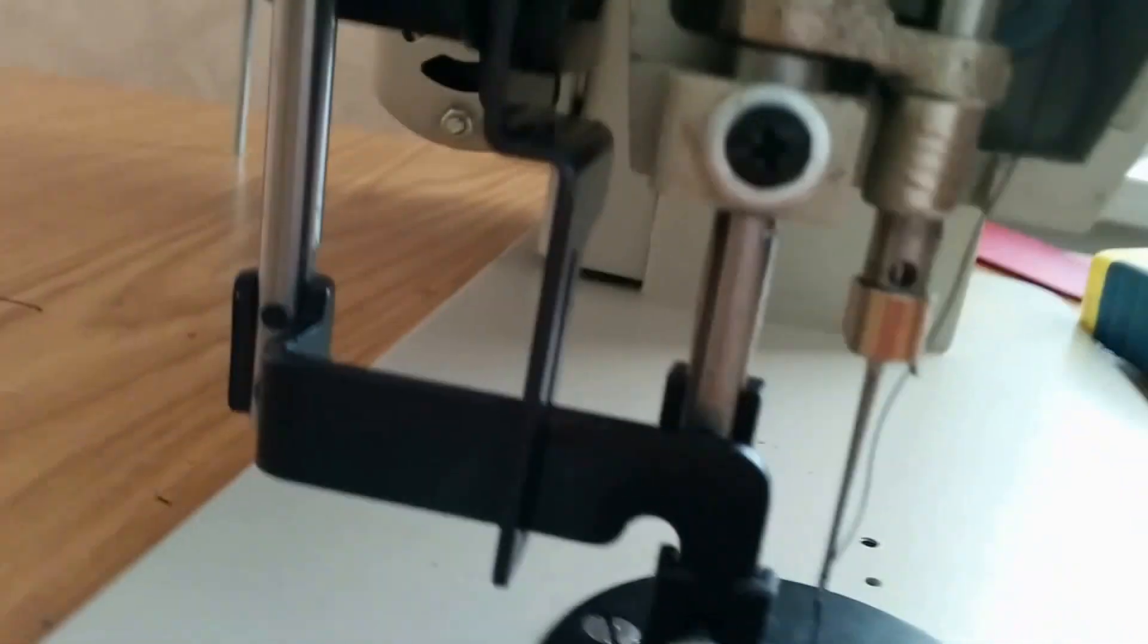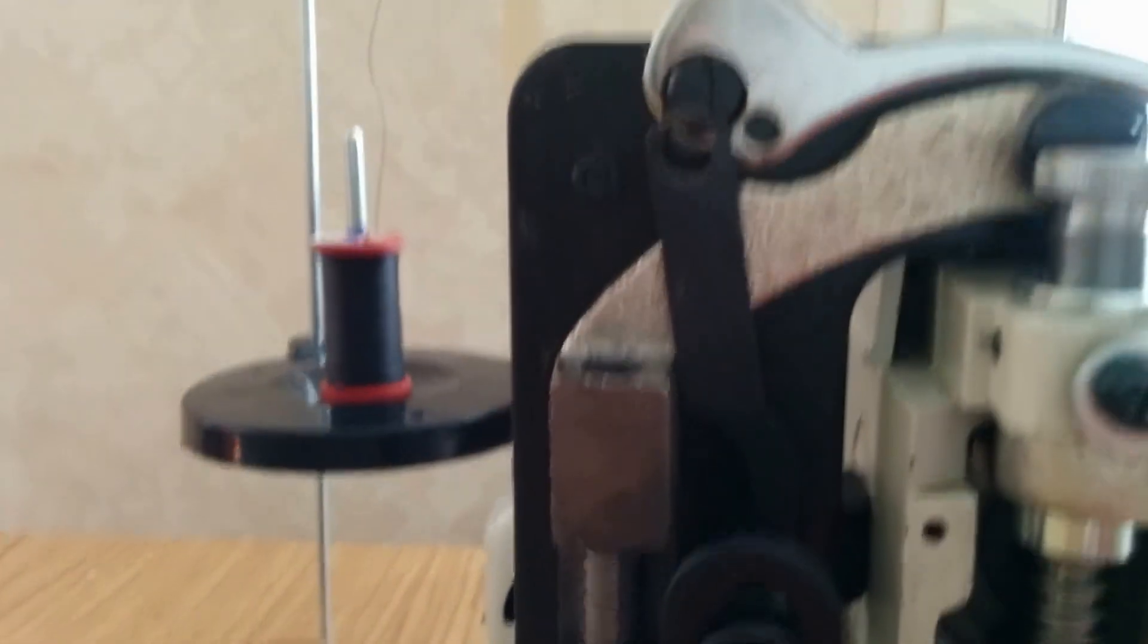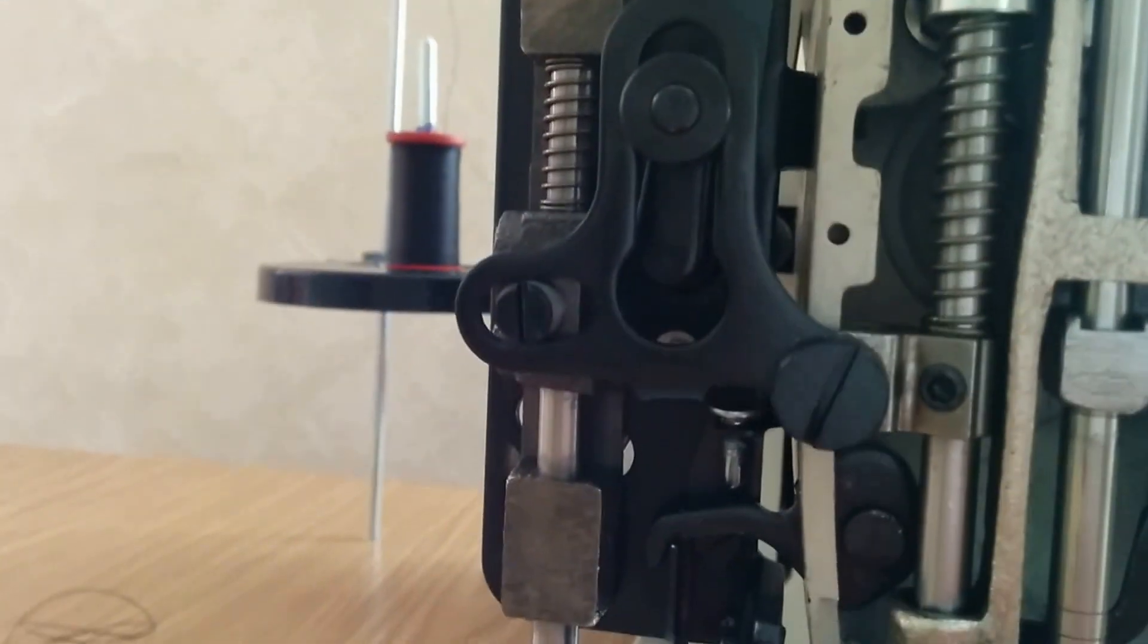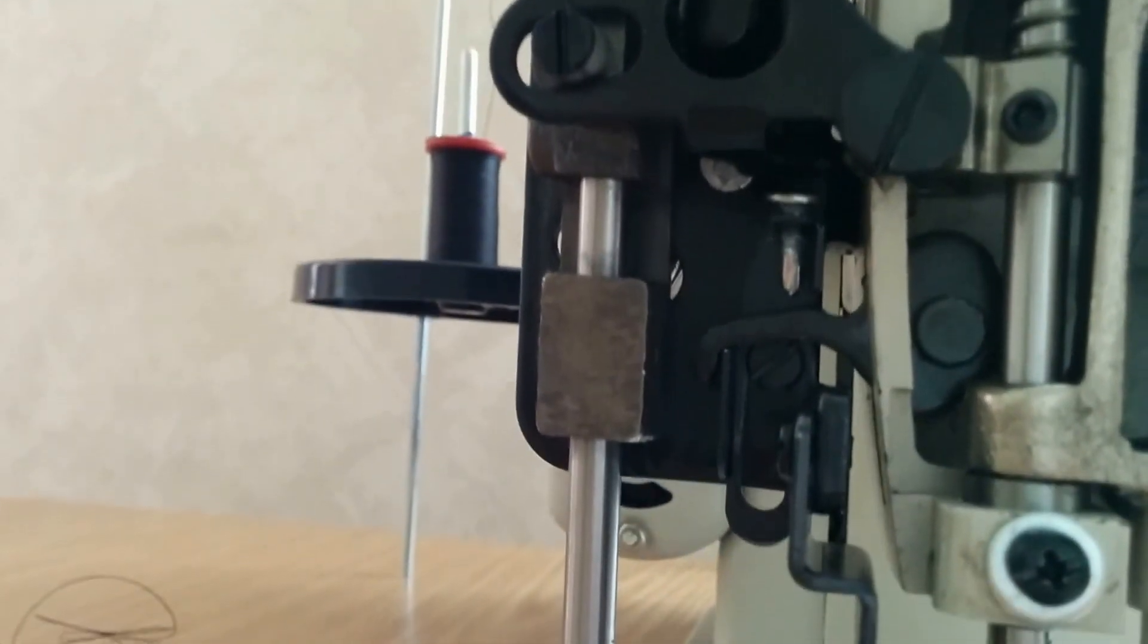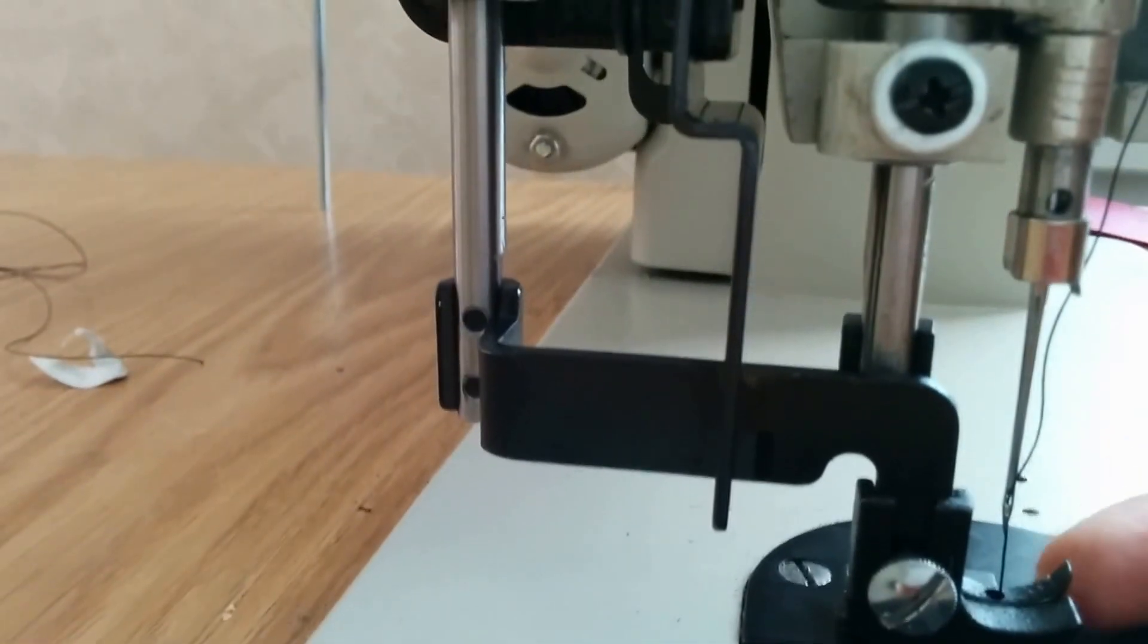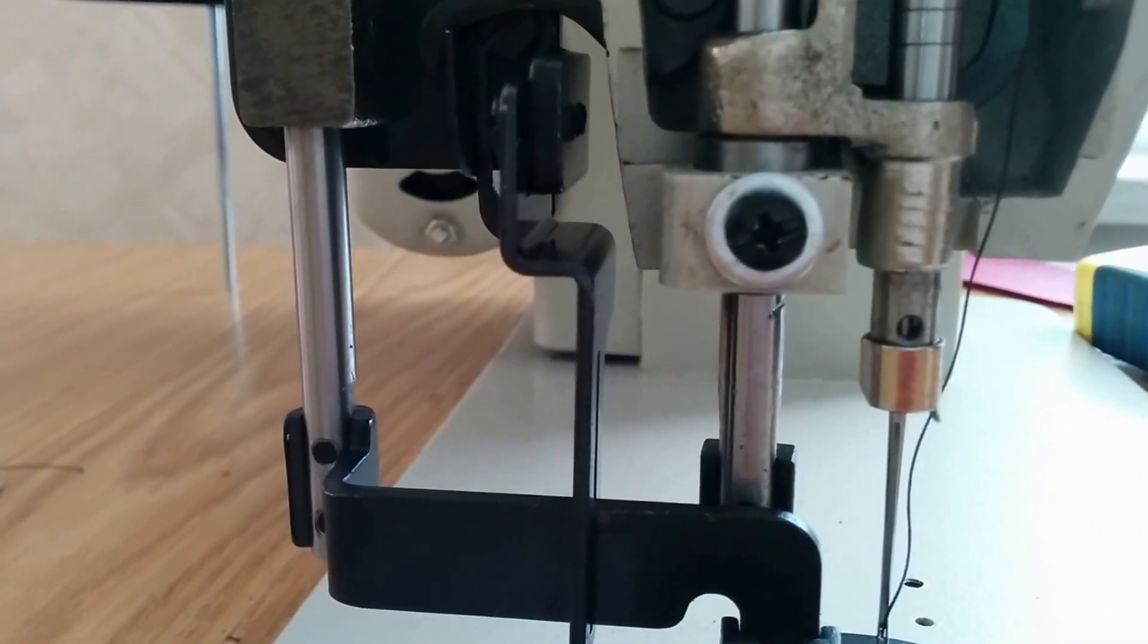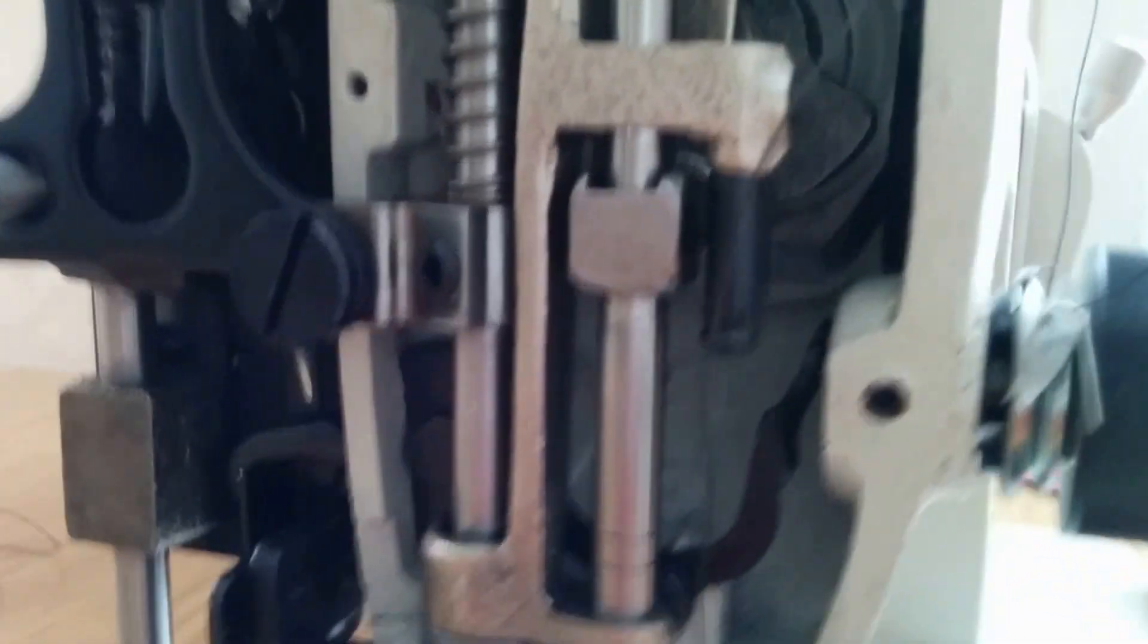The solution that I came up with is, this is the presser foot lift, which I disconnected, and it's connected to this rod down here. What it does is it raises the presser foot and it also disengages the tension from the tensioner on the thread.